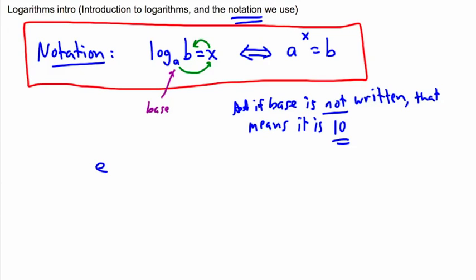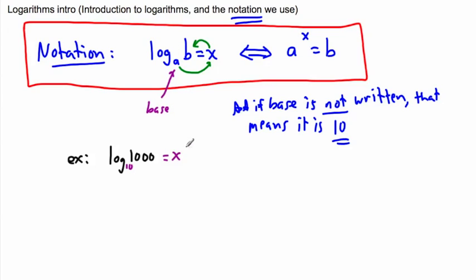So for example, let's say we do log of a thousand. What this really means is there's a stealth 10 here as the base. Because you can actually figure this out — if you write this as an exponent, it's easier to solve. You might want to know: what's the log of a thousand? That may not be obvious that it's three. So you say log base 10 of 1000 equals x, and you can rewrite it as an exponent: 10 to the power of x equals a thousand.